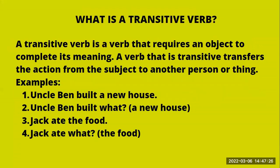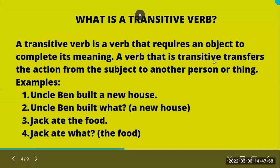What exactly is a transitive verb? A transitive verb is a verb that requires an object to complete its meaning. A verb that is transitive transfers the action from the subject to another person or thing. Let's look at some specific examples.